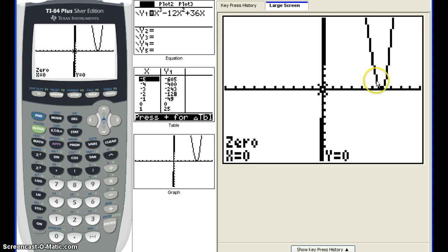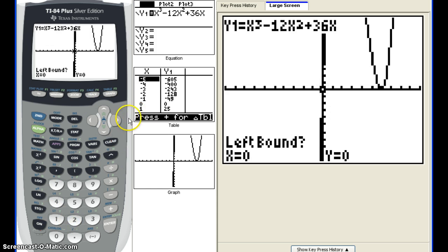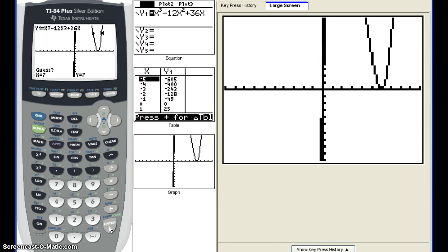Now our other zero is going to be here. So we're going to hit second trace, 2 for zero. And I'm going to choose between 5 as my left bound and 7 as my right bound. And for the guess, we hit enter again. And it gives us a zero of 5.999. Well, that's going to round up to 6. So that's another way to find it. Now here's something really important to think about.